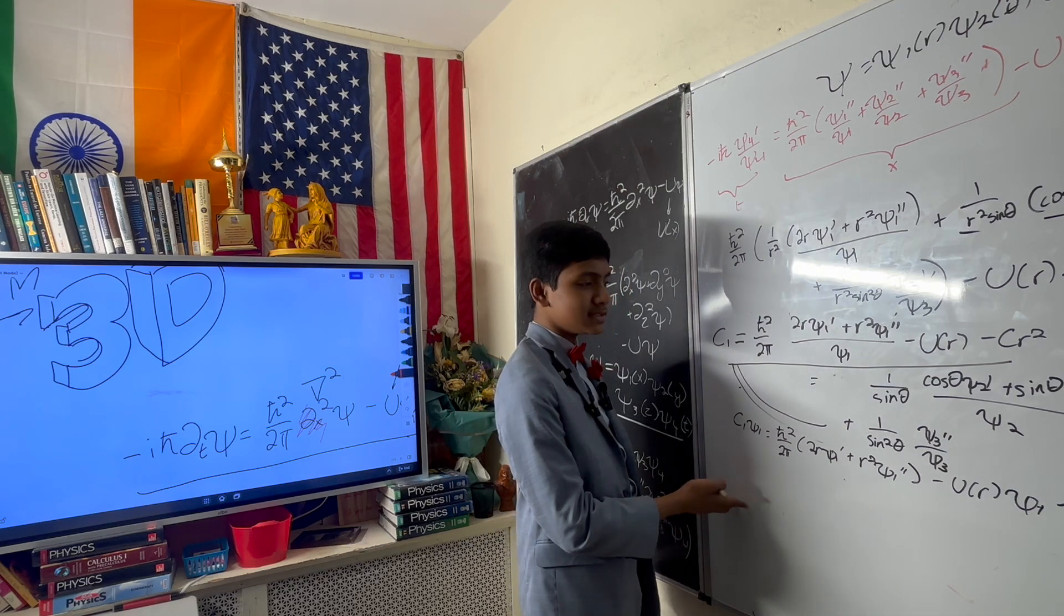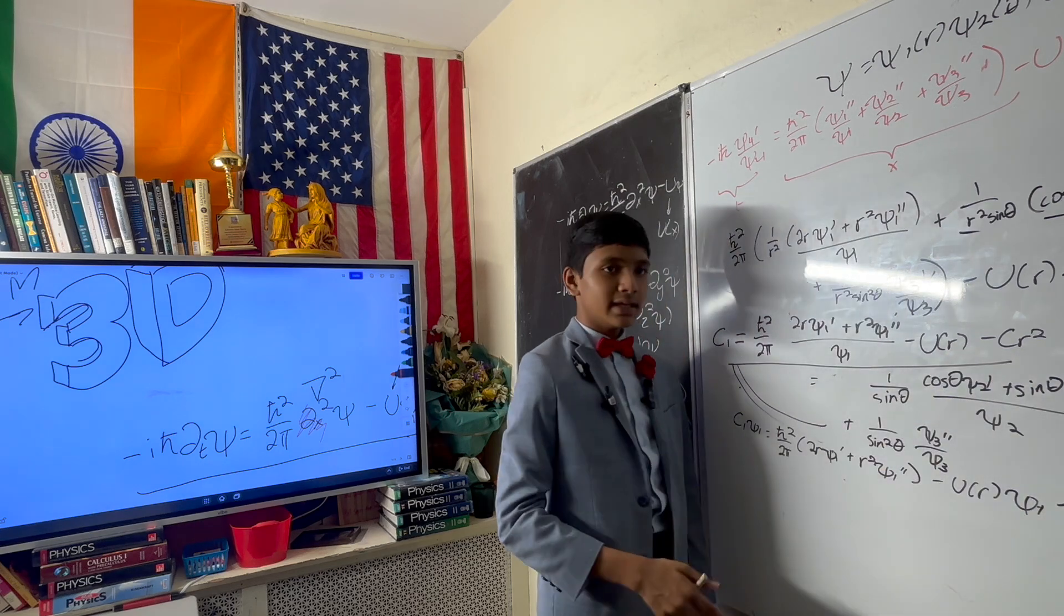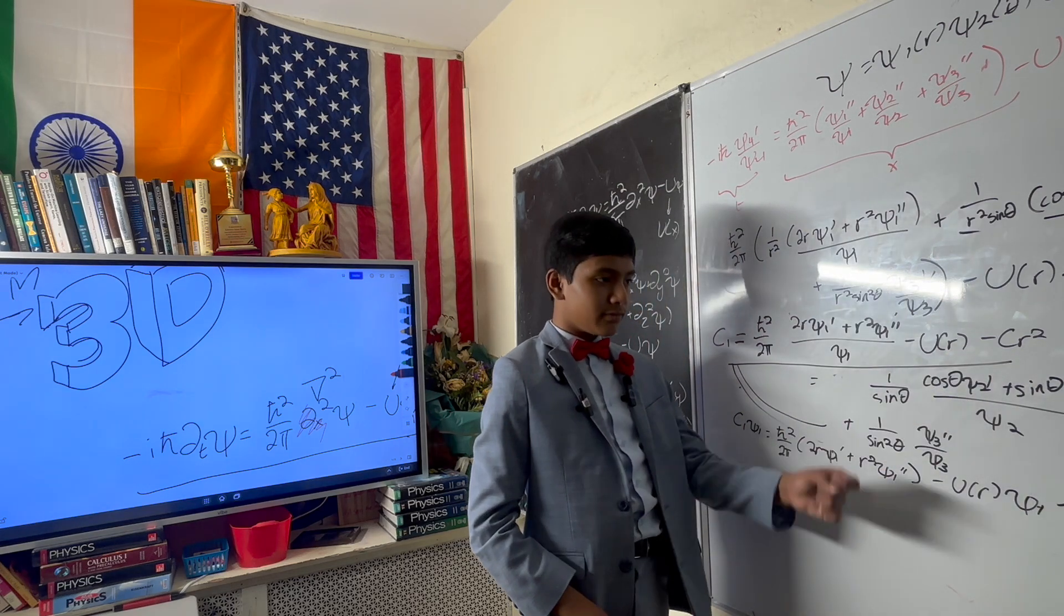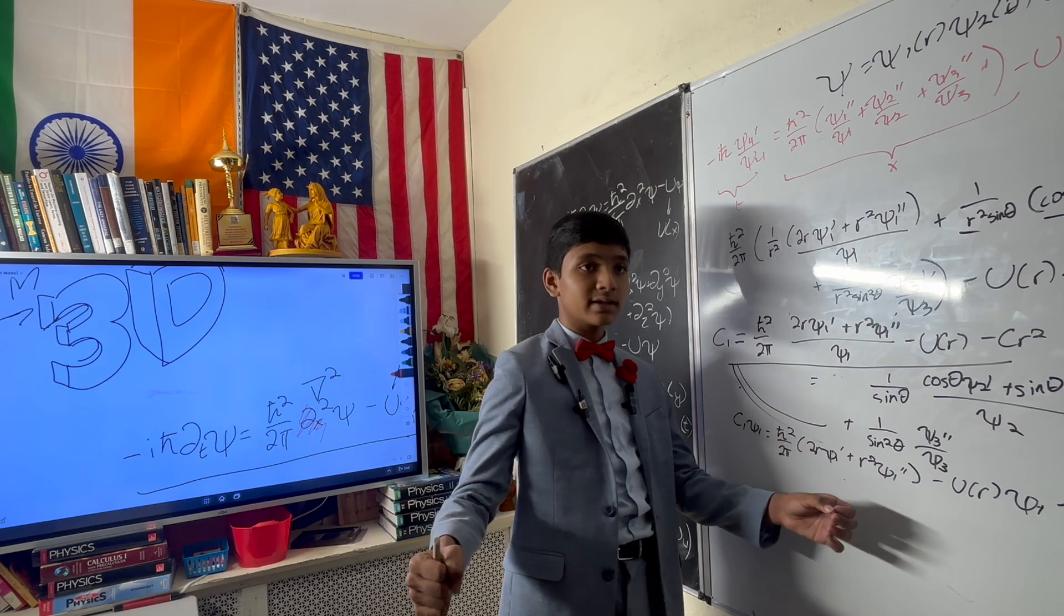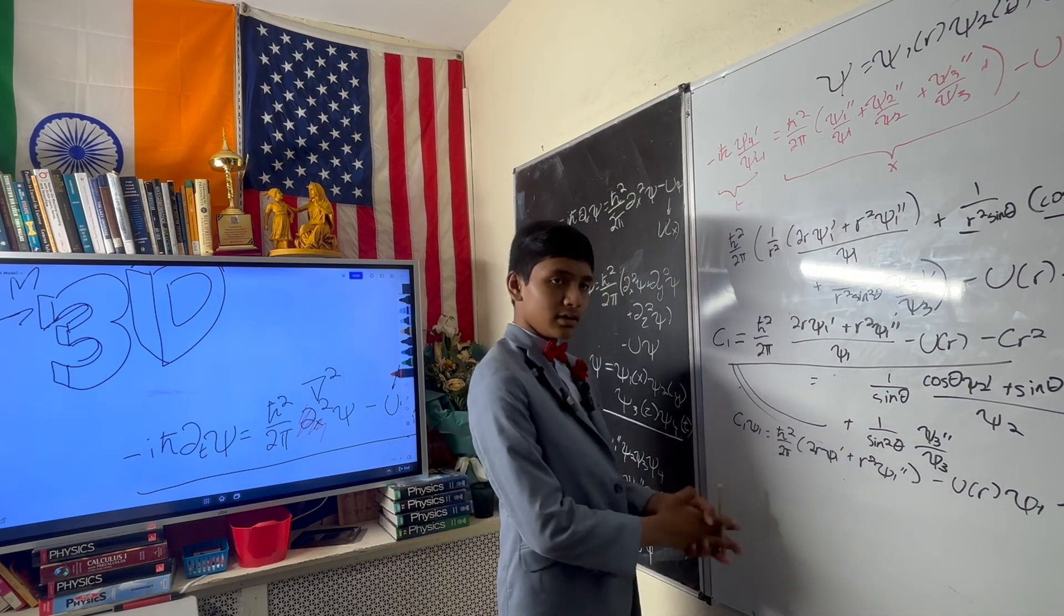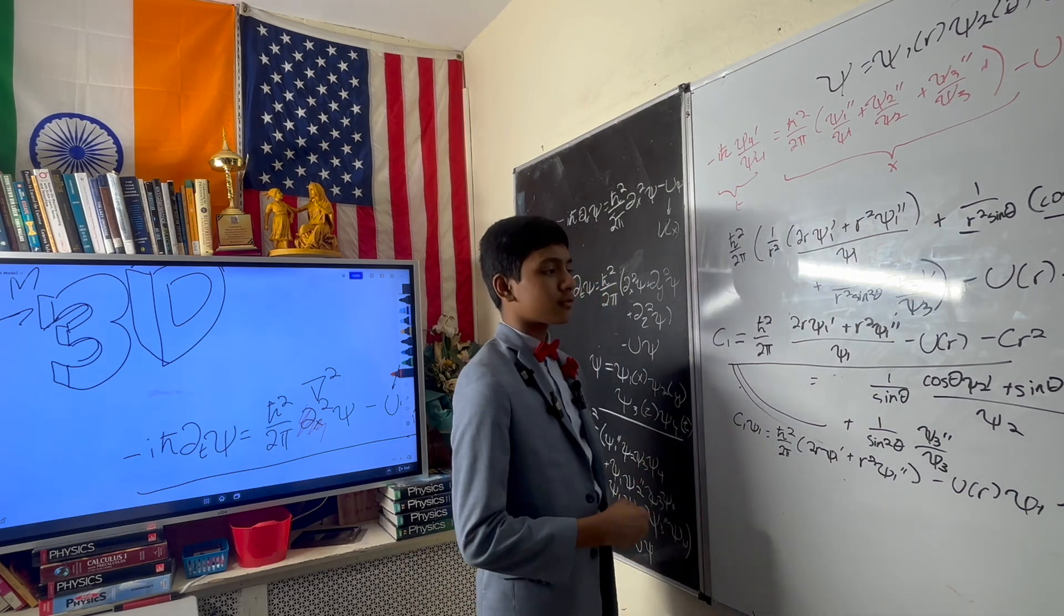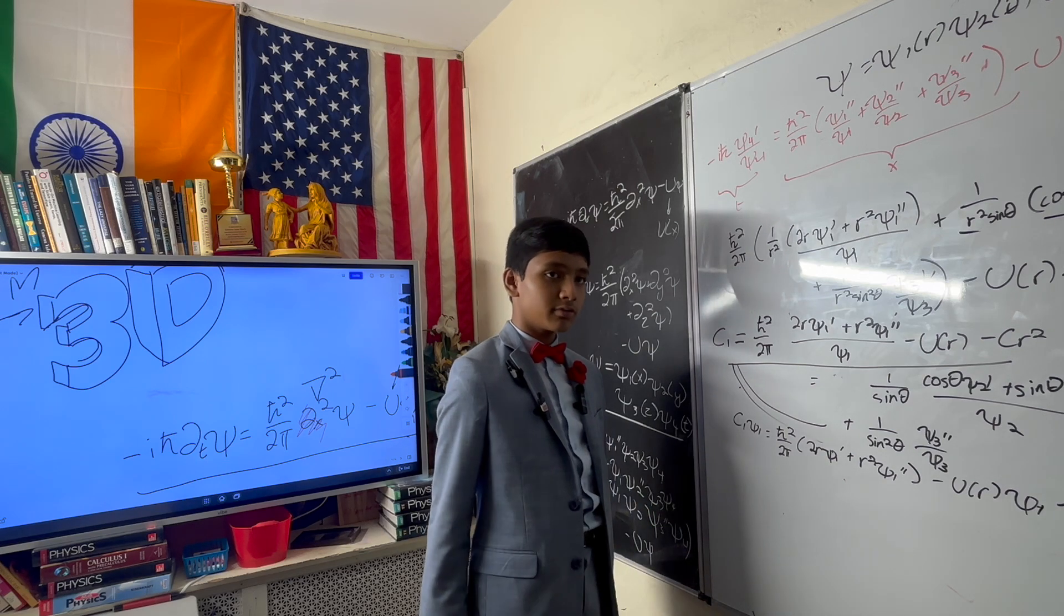So you get two equations, this one and that one, and you can keep working with the trick that if one side is a function of one variable and another side is a function of different variables, then both of them must be equal to a constant. You can use that fact to work through it and slowly reduce these to bare-bones single variable differential equations.